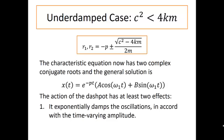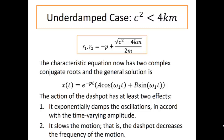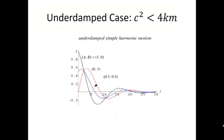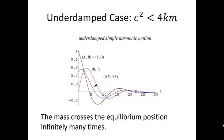The action of the dashpot has at least two effects in this case. First of all, it exponentially damps the oscillations in accord with time varying amplitude, and it slows the motion. That is, the dashpot decreases the frequency of the motion. Here's a picture of what that graph might look like in a couple of different under damped cases. Notice that the mass now crosses the equilibrium position infinitely many times.